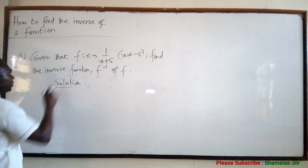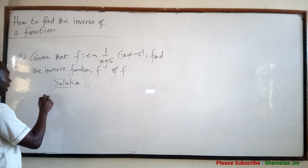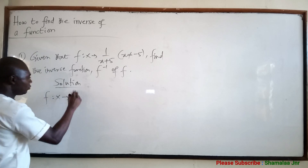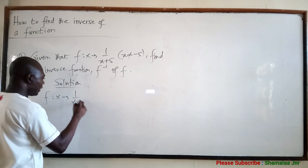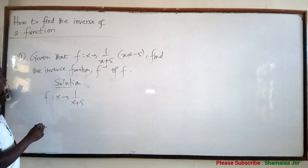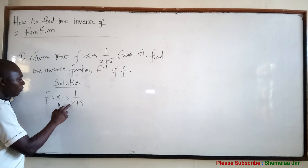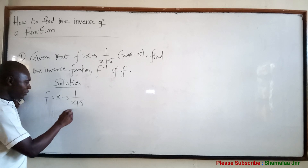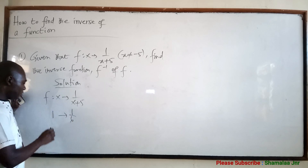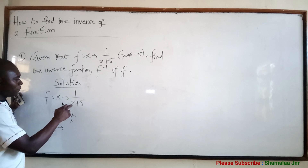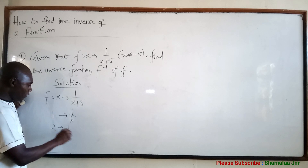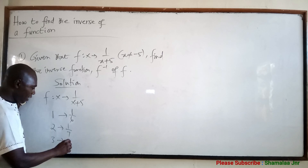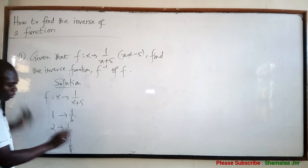You see, this is a function. So we have F of x mapping onto 1 over x plus 5. What this means is that when x is equal to 1, you are going to get 1 over 6. When x is equal to 2, you are going to get 1 over 7. When x is equal to 3, you are going to get 1 over 8.